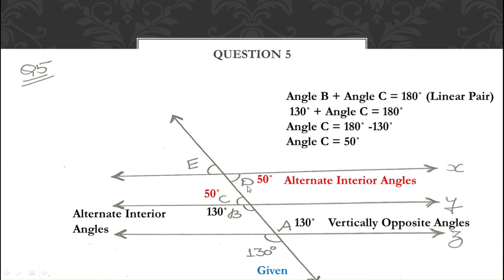Since angle D = 50°, angle E is also 50° because angles D and E are vertically opposite angles. Vertically opposite angles are always equal in measure. So that is how we solve this question to find the values of all the missing angles.